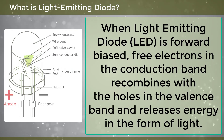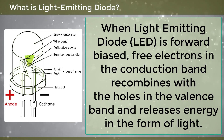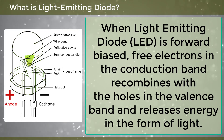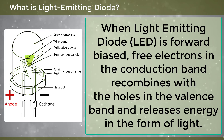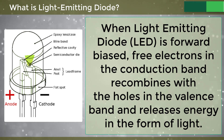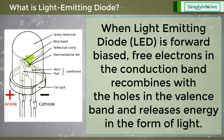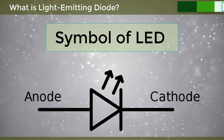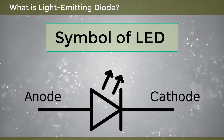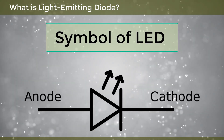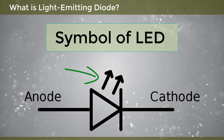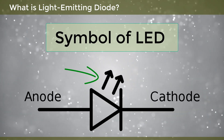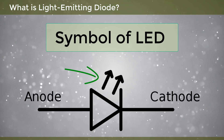When a Light Emitting Diode is forward biased, free electrons in the conduction band recombine with the holes in the valence band and release energy in the form of light. The symbol of LED is similar to the normal PN junction diode, except that it contains arrows pointing away from the diode, indicating that light is being emitted.